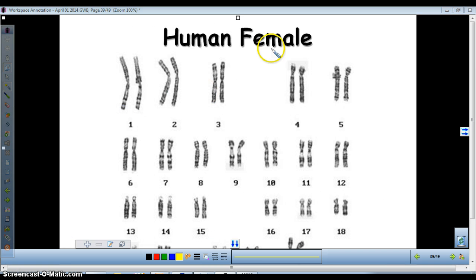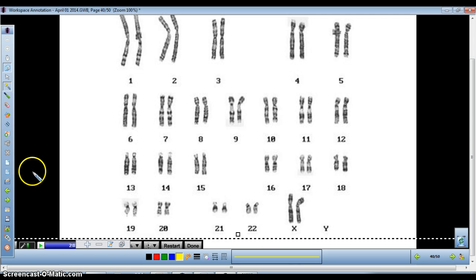Now let's look here. What do we have? We are looking at a human female. How do you know? You know by looking again at the sex chromosomes. Here we have two X's, and remember that two X's equals female.